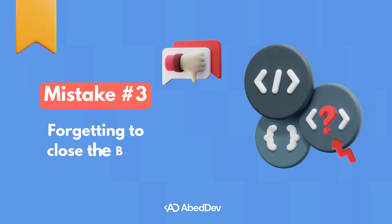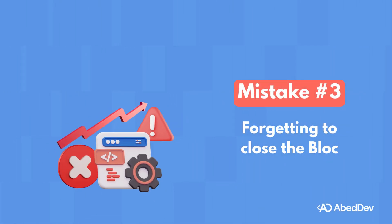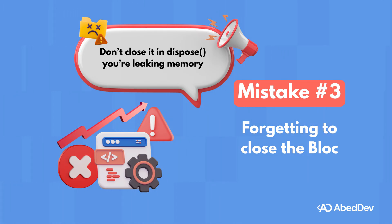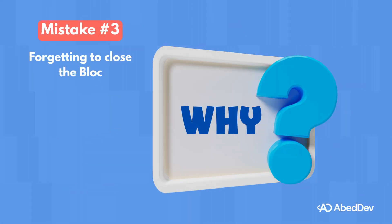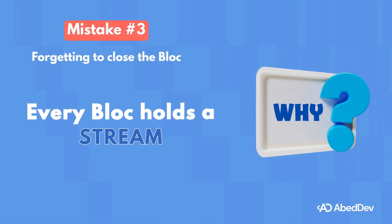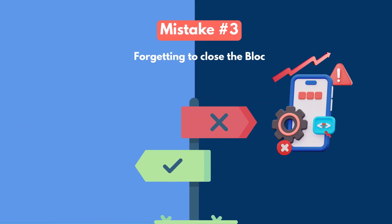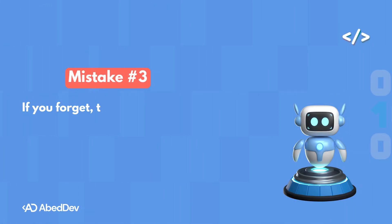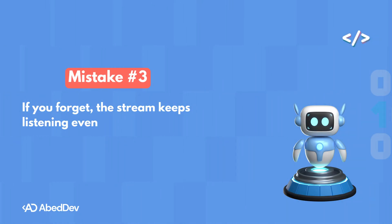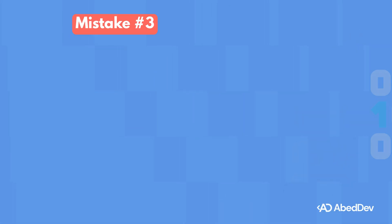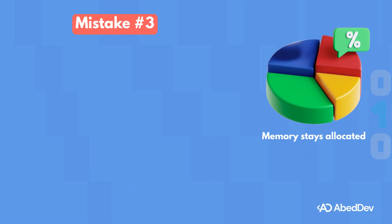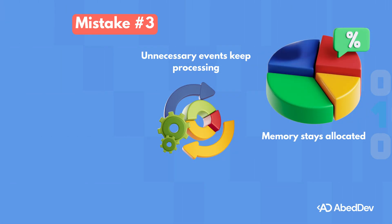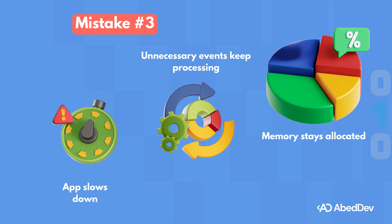Mistake number three: forgetting to close your bloc or cubit. When you create a bloc or cubit manually and don't close it in dispose, you are leaking memory. Every bloc holds a stream, and that stream stays alive until you explicitly close it. If you forget, the stream keeps listening even after the widget is gone — memory stays allocated and unnecessary events keep processing.